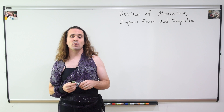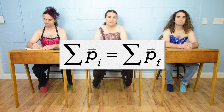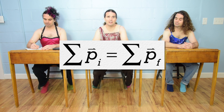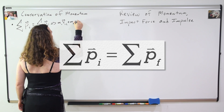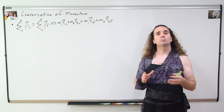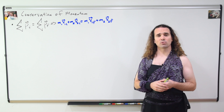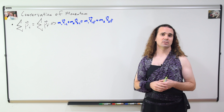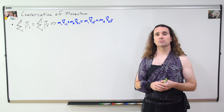Bobby, what is the equation for conservation of momentum? The sum of the initial momenta equals the sum of the final momenta, and momentum is a vector. Please remember to write out the full equation for conservation of momentum when you use it. You are much less likely to make mistakes when you do.